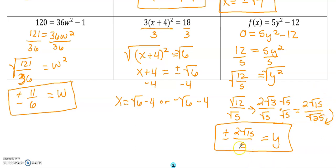We'll get 2√15 over √25. That √25 is 5. But again, we need two answers here. We need a plus minus 2√15 over 5.